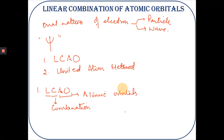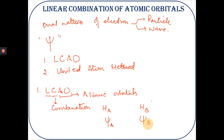To understand this, let's consider two atoms — hydrogen atom H_a and hydrogen atom H_b. The atomic orbitals of hydrogen atom A are represented by the wave function psi_a, and the wave function psi_b represents the atomic orbitals of hydrogen atom B. When the electron clouds of these two atoms overlap as the atoms approach each other, the wave function for the molecule is given by psi_ab.